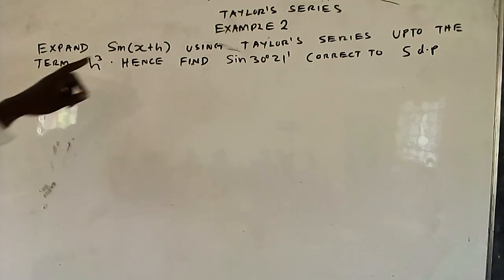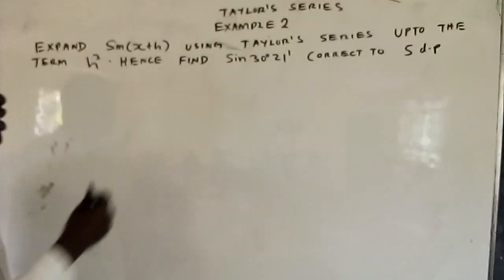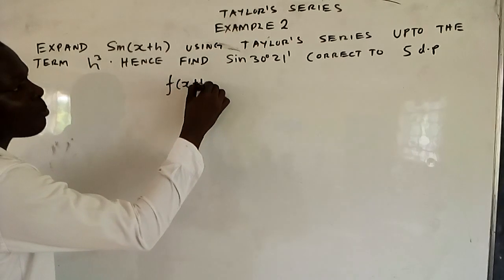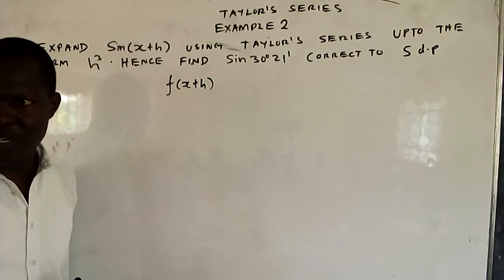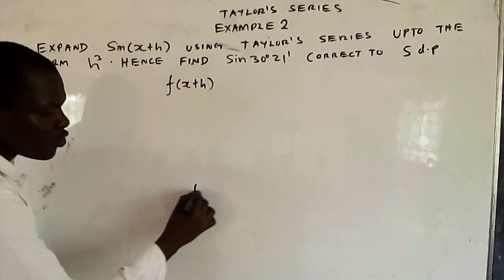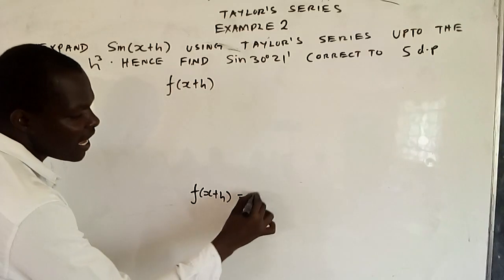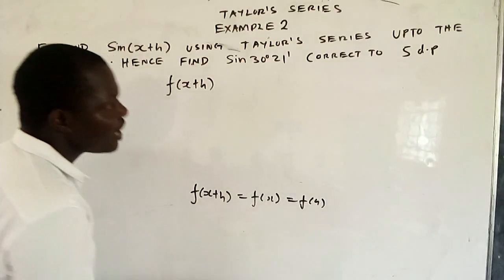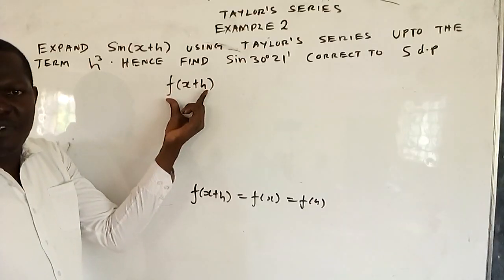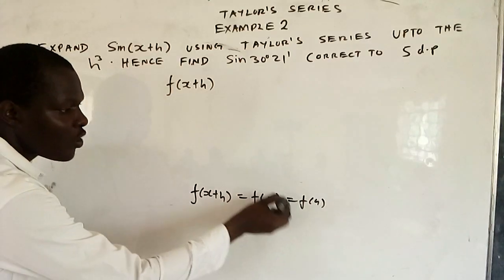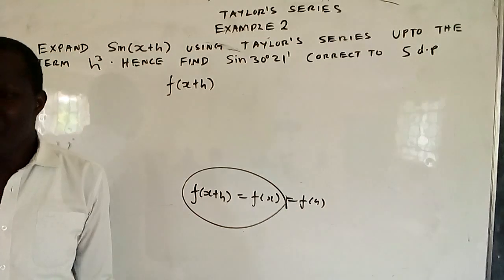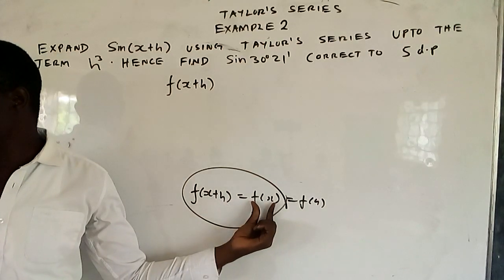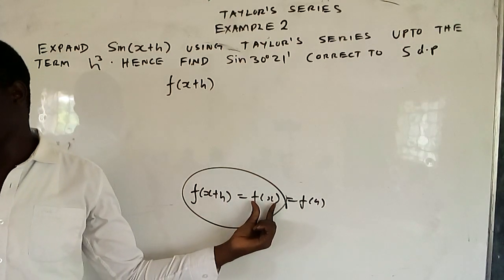Before you expand sine x plus h, it means you are expanding a function x plus h. So we said you go to your new value: f of x plus h equals f of x. So when you expand f of x plus h, you start from f of x.